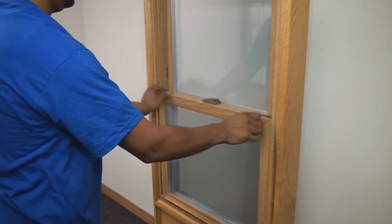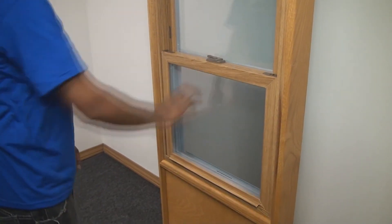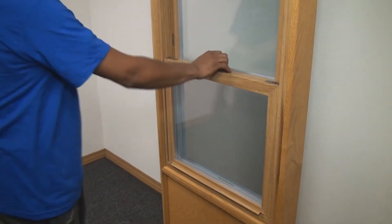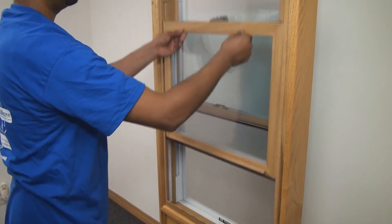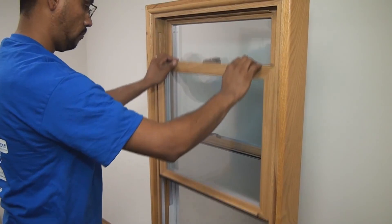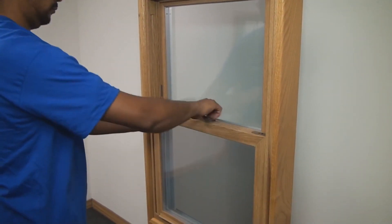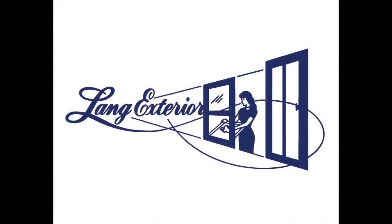If you see the sash is slowly sliding upward, that means the balancer is too tight. If you see the sash slowly sliding downwards, that means you need to tighten the balancer. If you need further assistance, please call Lang Corporate Headquarters at 773-737-4500.